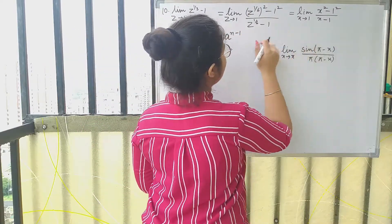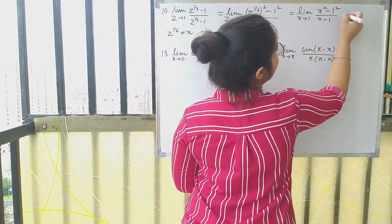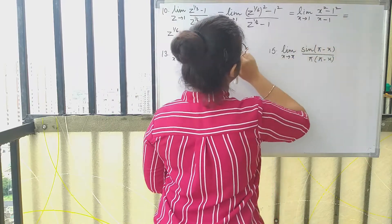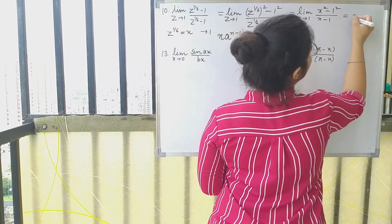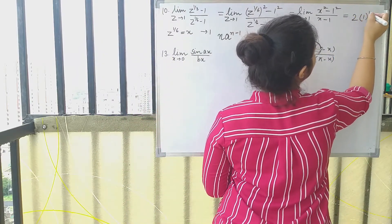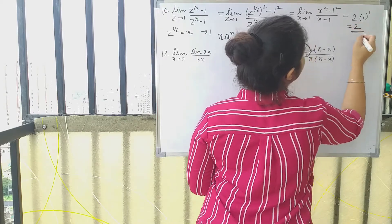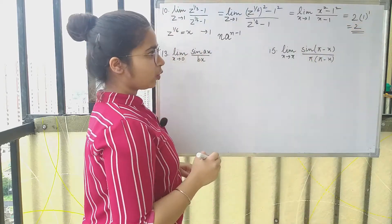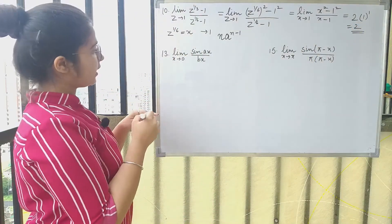We can write it as limit x tending to 1 of (x² − 1²)/(x − 1). By the formula, the answer is n·aⁿ⁻¹, where n = 2 and a = 1. So the answer is 2 × 1¹ = 2.